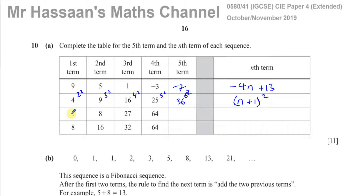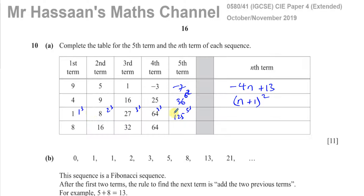The next sequence is another type we should recognize — 1, 8, 27, 64. These are all cubed numbers: 1 cubed, 2 cubed, 3 cubed, 4 cubed, and 5 cubed which is 125. You should be able to recognize both square numbers and cubed numbers. The first term is 1 cubed and the second term is 2 cubed and the third term is 3 cubed, so the nth term is n cubed.